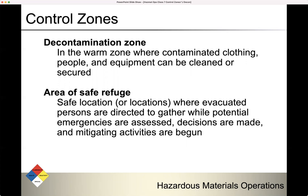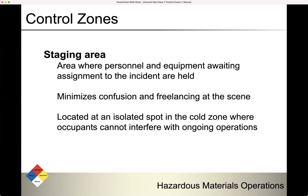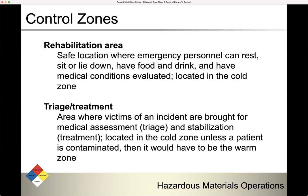The best advice is: depending on the situation, you'll have to determine where that is. The staging area is where personnel and equipment awaiting assignment to the incident are held. This minimizes confusion and freelancing at the scene. Staging is located in an isolated spot in the cold zone where occupants cannot interfere with ongoing operations. The rehabilitation area is another safe location in the cold zone where emergency personnel can rest, have food and drink, and have medical conditions evaluated.